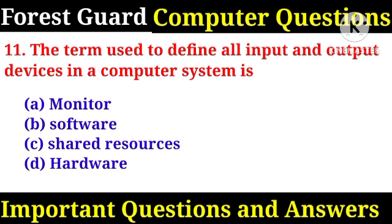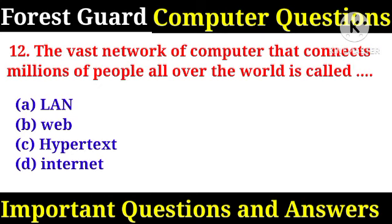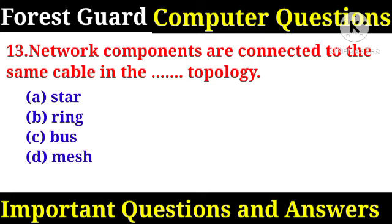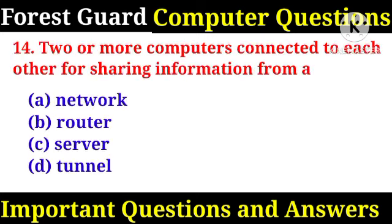The term used to define all input and output devices in a computer system is hardware. The vast network of computers that connects millions of people all over the world is called? Right answer: The Internet. Network components connected to the same cable in the topology? Right answer: A, star.